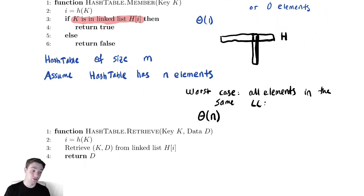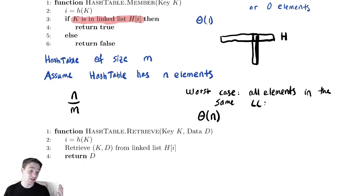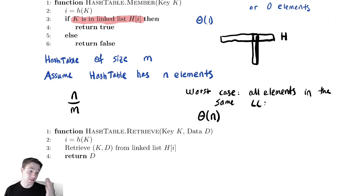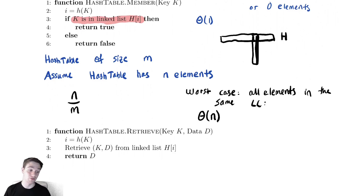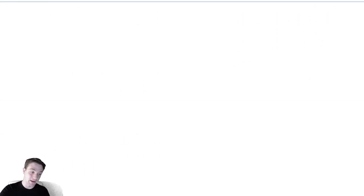The runtime is primarily governed by iterating through the linked list. We want to understand the expected length of the linked lists within this hash table. Naively, if you have n things inserted and m possible locations, you might guess n/m — if you have five things in a thousand locations, five out of a thousand seems reasonable. But that's not rigorous, so let's formally figure out the expected length of the linked list.